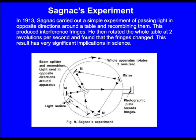In 1913, Sagnac carried out a simple experiment of passing light in opposite directions around a table and recombining them. This produced interference fringes. He then rotated the whole table at two revolutions per second and found that the fringes changed.